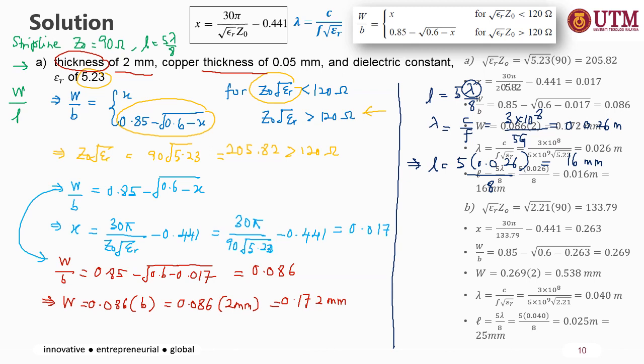The same approach applies to question (b) using the appropriate equations to get W and L. Note this calculation is only valid if there is no phase shift requirement in the structure. If a phase shift is required, there will be additional equations to consider — this will be discussed in the microstrip waveguide analysis.